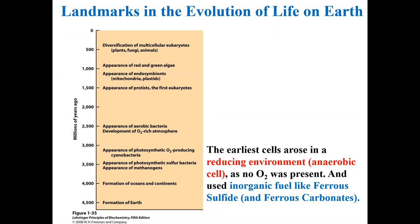One question students often ask is: what makes it unique for a living organism? A living organism typically has a high degree of chemical complexity, and they are organized at the microscopic level — highly organized. They are able to extract and sometimes transform energy from their environment.